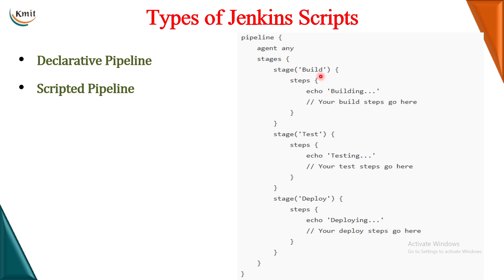Say suppose automatic building is successful - what output do you want to print? It could be the logs, or if you remember we clicked something called archive the artifacts, so there is some output you are getting after building your project. If you want to print that, you can print it inside the steps. Similarly, if test is successful, what do you want to print? If deployment is successful, what do you want to print? Inside steps you can write all this. As you can see, this declarative pipeline is very simple.